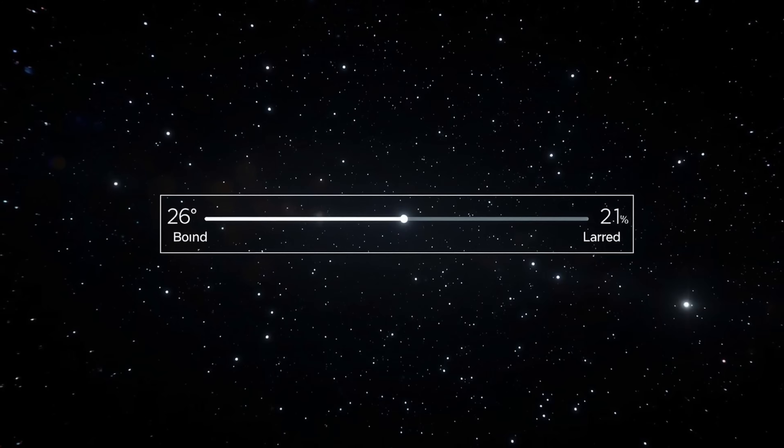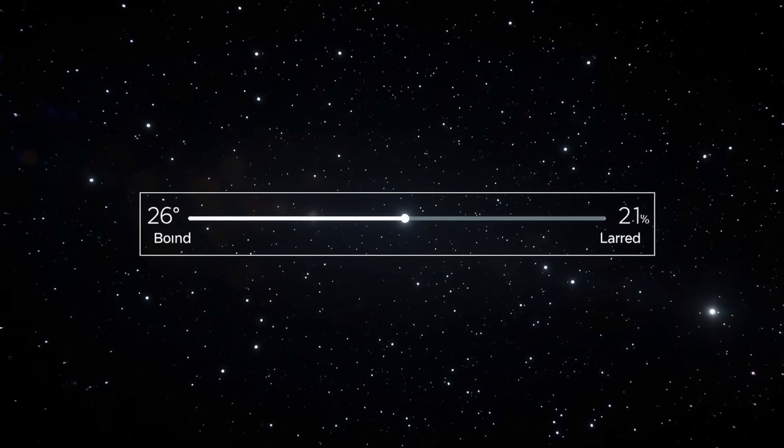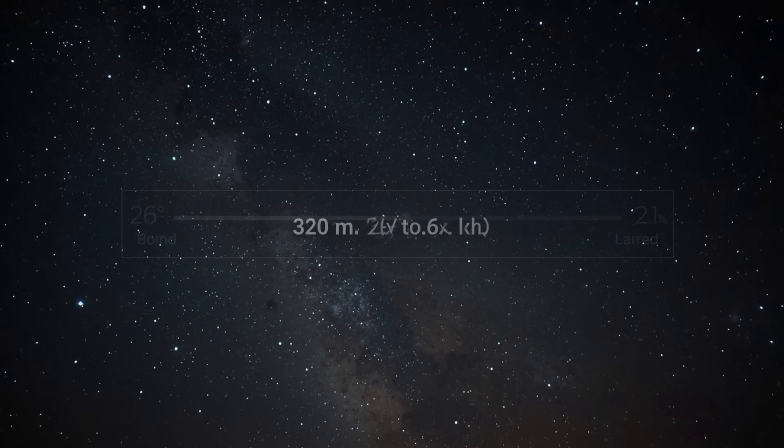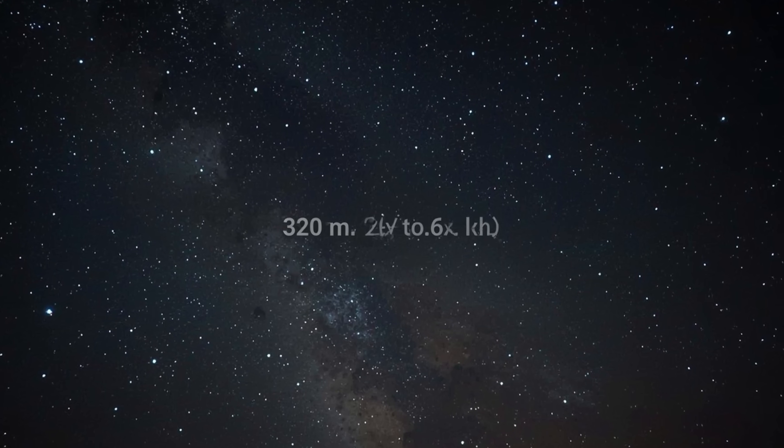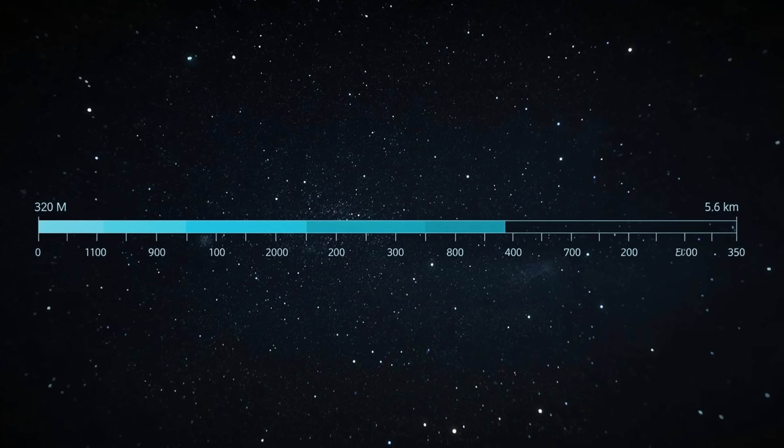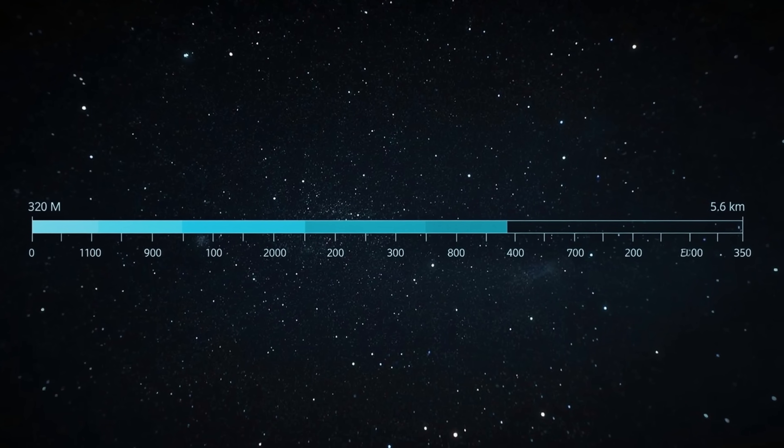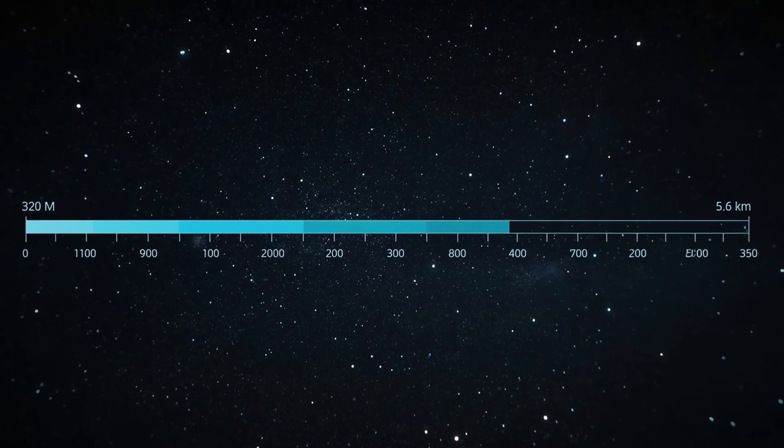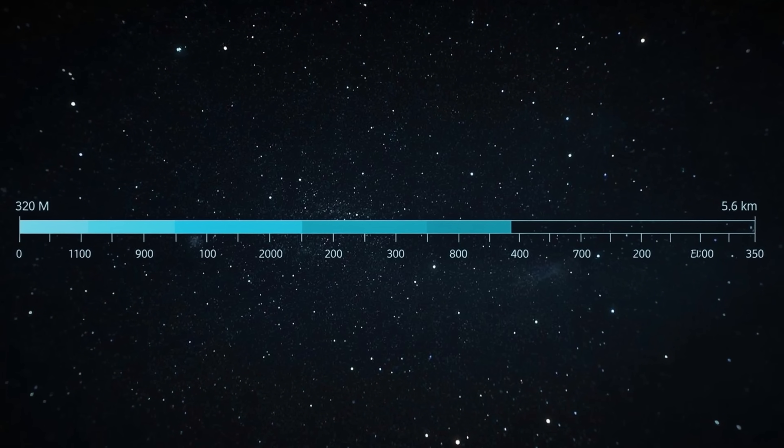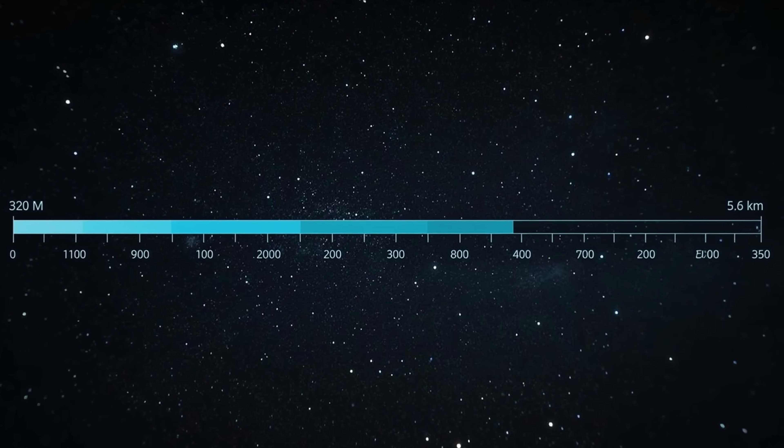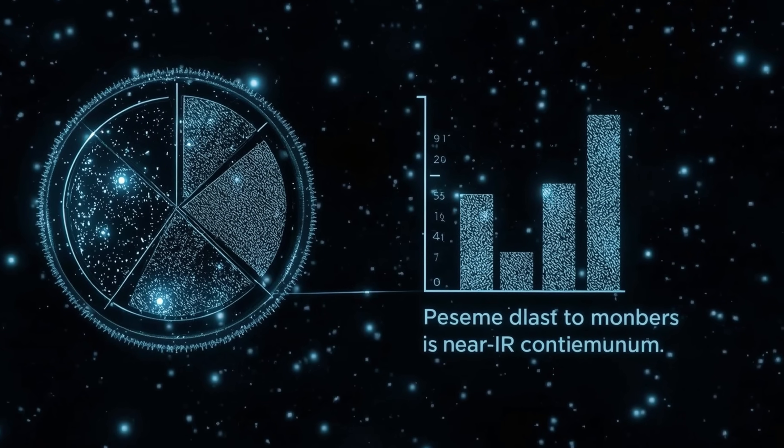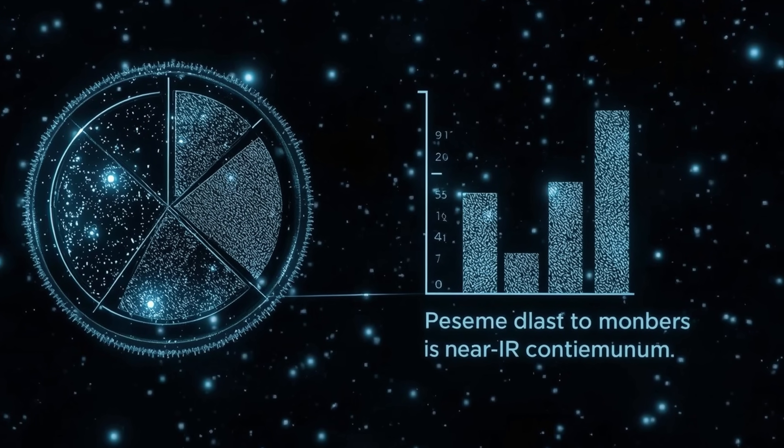The nucleus size remains one of the key unknowns. Hubble's upper limit of 5.6 kilometers and lower bound around 320 meters leaves a wide range of possibilities. The SPHEREX finding that over 99% of near-infrared continuum flux comes from coma dust, rather than the nucleus itself, suggests we're seeing a relatively small object surrounded by an enormous cloud of released material.